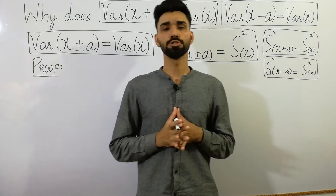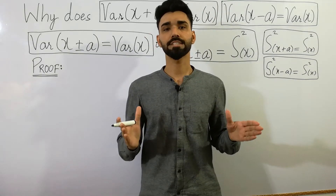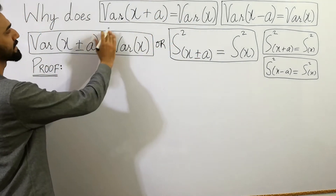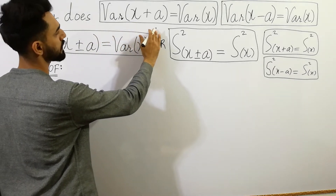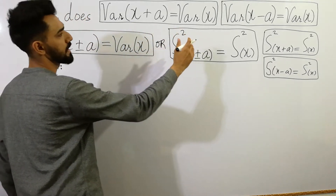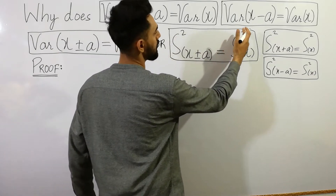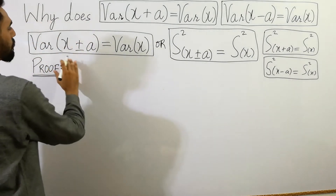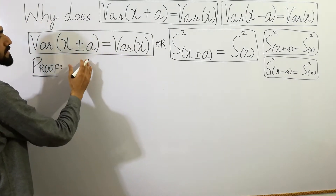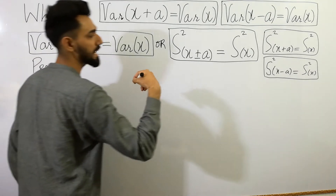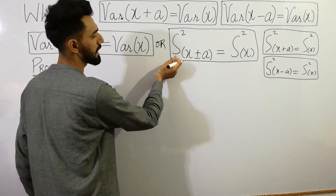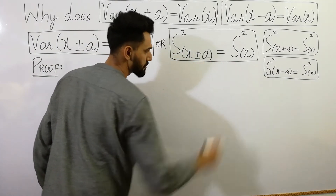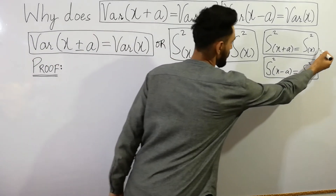Hey guys, welcome to my YouTube channel Asad International Academy. Today I am going to prove why variance of X plus a is equal to variance of X, or variance of X minus a is equal to variance of X. You can say that variance of X plus-minus a is equal to variance of X, which is denoted as σ² of X plus-minus a equals variance of X.